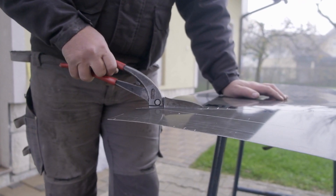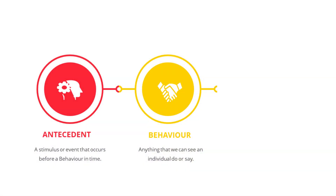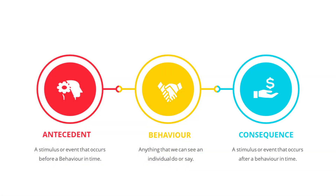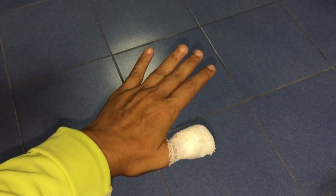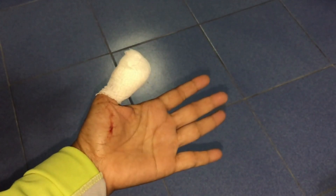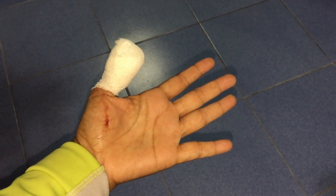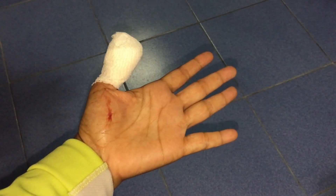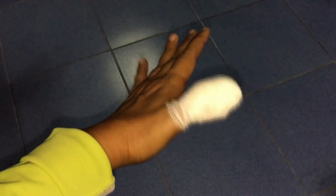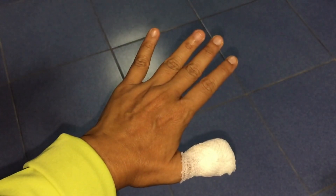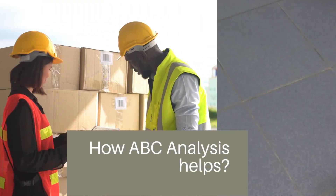Lastly, we have the C — Consequence. This is the outcome or result of the behavior. Consequences can be positive or negative, influencing future behavior. The consequence of Alex's behavior is that the task is completed quickly. However, he has injured his finger in the process.